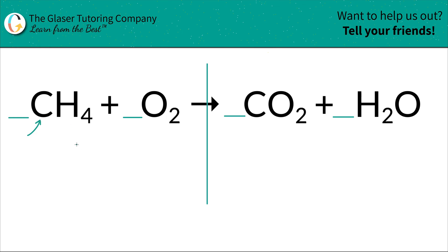Work with the first element you see working from left to right. So we have one carbon atom on the left. There's an invisible one down there. And we also have one carbon atom over here on the right-hand side. So that's balanced. Don't worry about it. Move on to the next one.